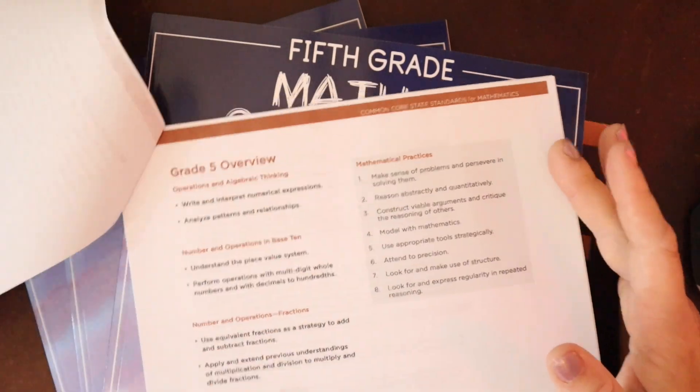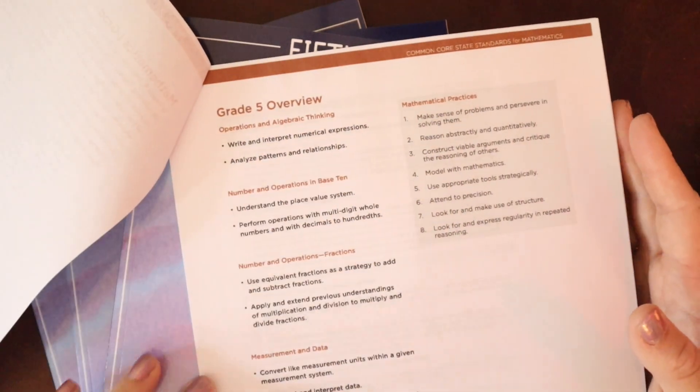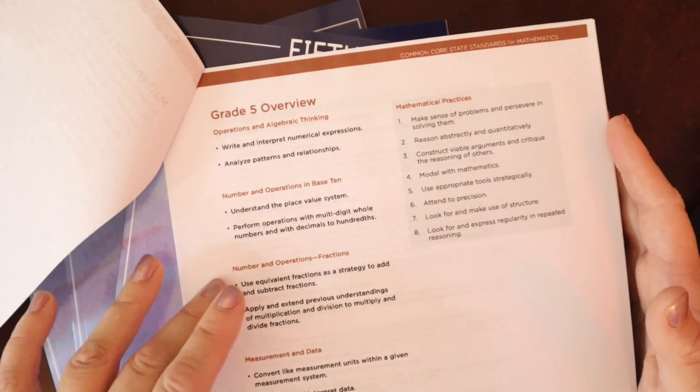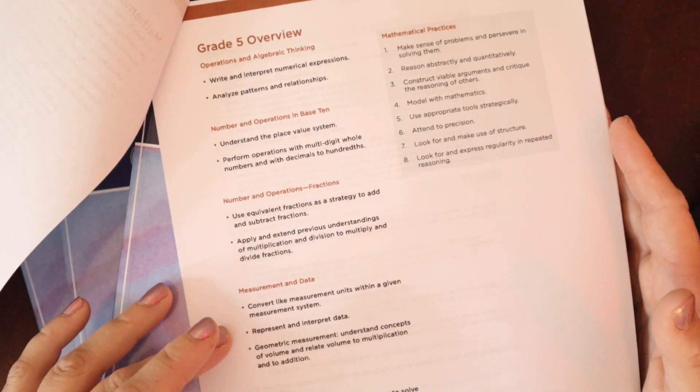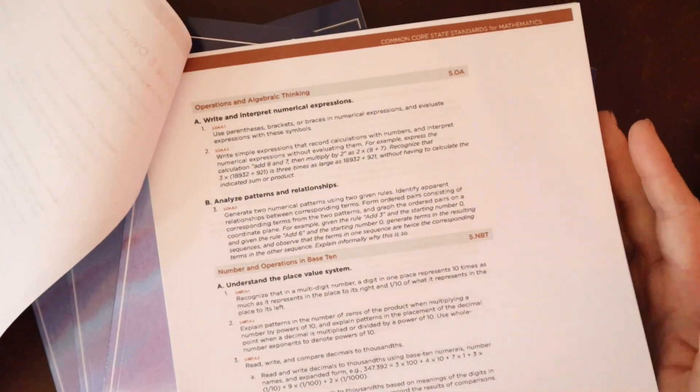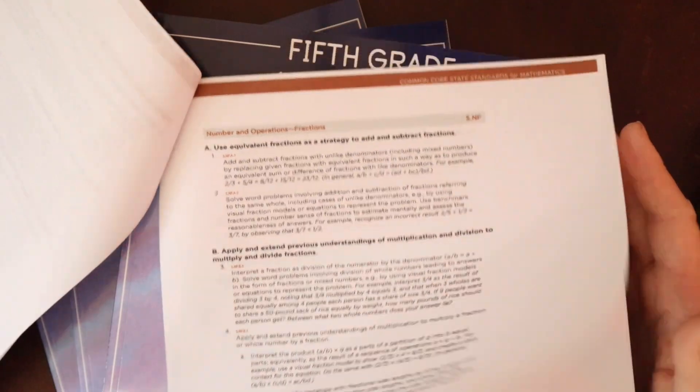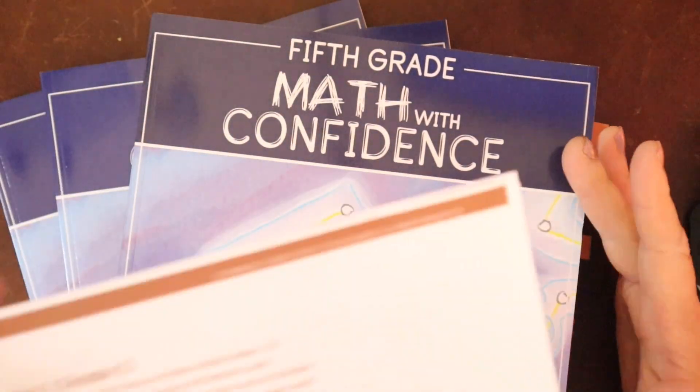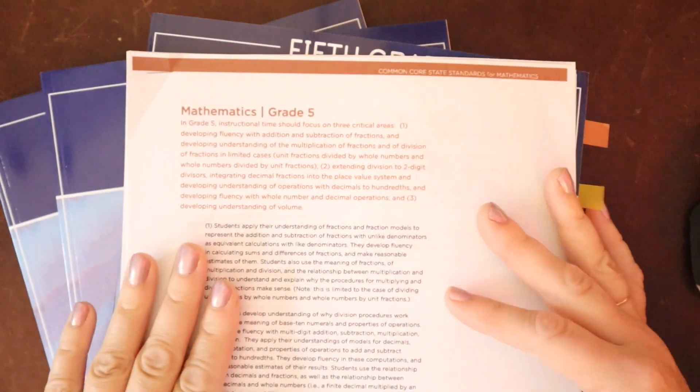So then they have an overview here of the different domains of math. We have operations and algebraic thinking. We have numbers and operations in base 10, number operations, fraction, measurement and data, and geometry. And then they break those down even farther. What does that actually look like? So the reason I'm showing you these is because this program is aligned with 5th grade standards.